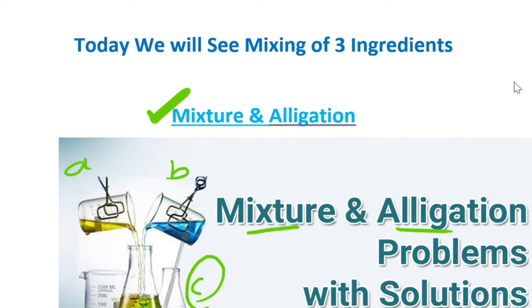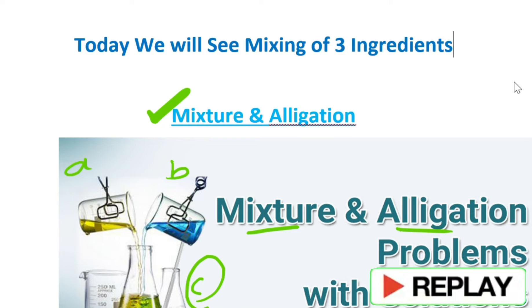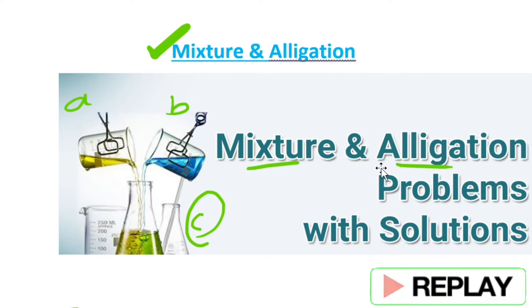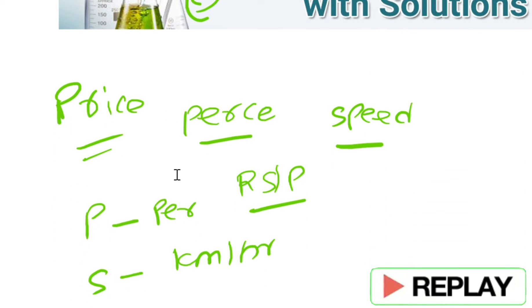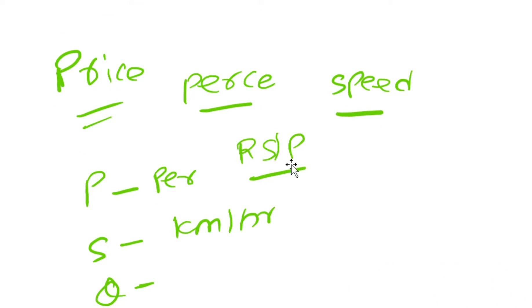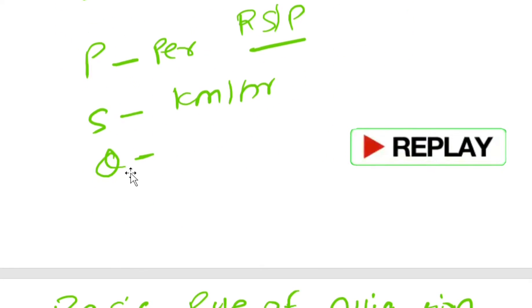Before jumping directly into questions, it's very important to revise what we have learned until now. In the last session I discussed mixture and allegation — what is mixture and what is allegation — and explained how this topic is used in different areas of mathematics, for example profit and loss, percentages, speed distance and time, and ratio and proportion.